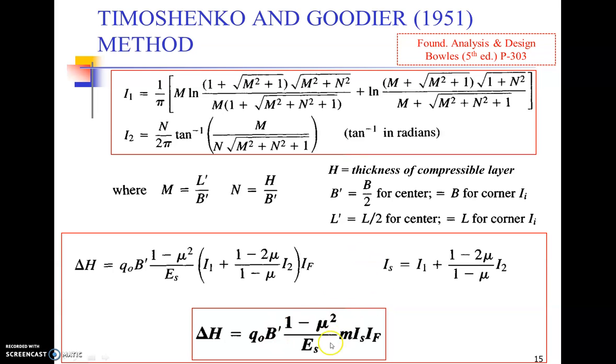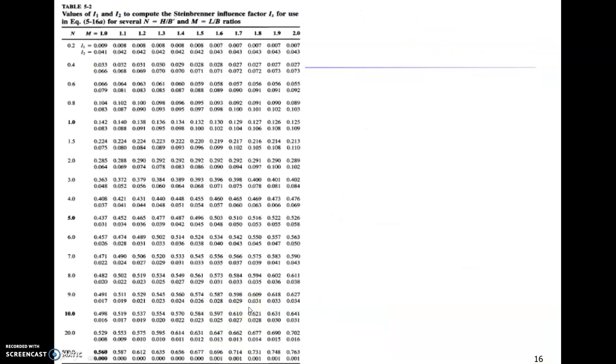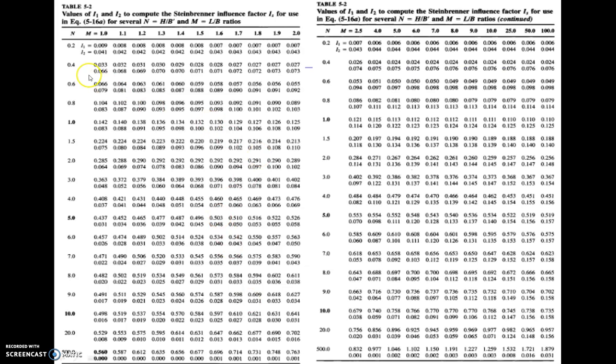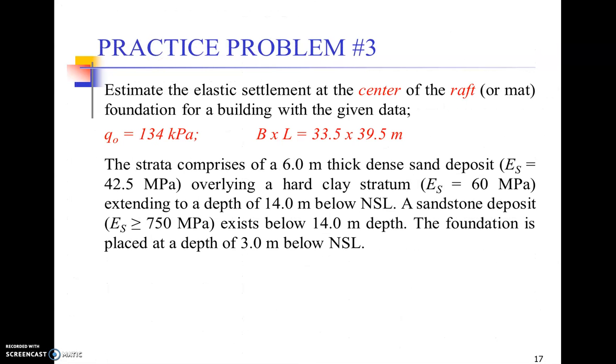And our final expression can be given by this very simple formula. For I1 and I2 we have got these tables which are between N and M values, where N equals H over B' and M equals L over B'. When we solve the problem you will understand it further. Now let's look at the problem at hand.